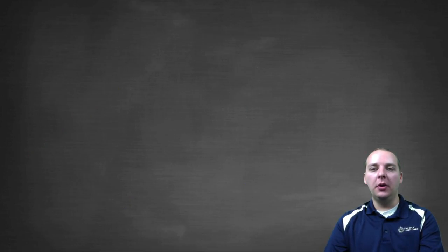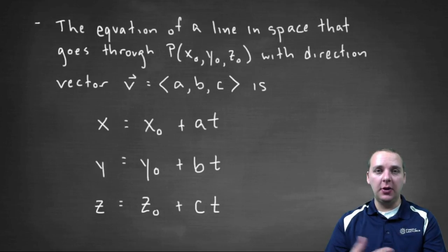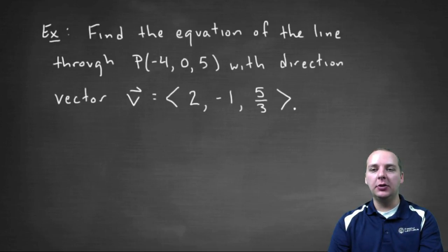Okay, now what we're going to do in the next video is actually do an example where we write the equation of a line in space. So I'll go ahead and show it to you, here we're going to try to find the equation of a line that goes through a certain point with a certain direction vector, so stay with us, and we'll do this example coming up shortly.